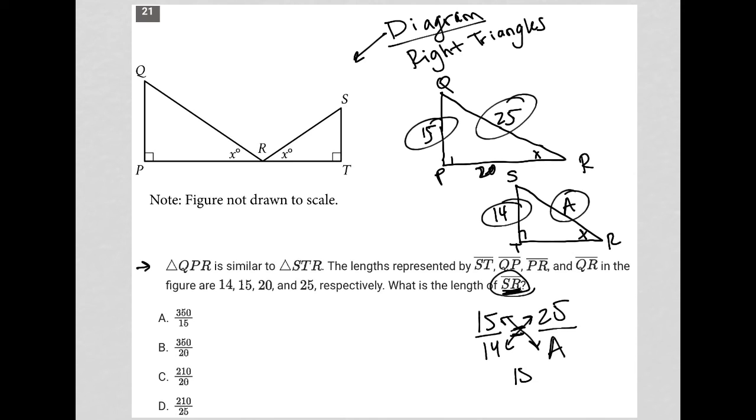So 15 times A is 15A. I go to my calculator. What is 14 times 25? Let's see. I get 14 times 25 is 350. I can then divide both sides by 15. And I see that while I could simplify, I don't, it doesn't seem that I need to because my answer choices here actually contain 350 over 15, which is choice A.